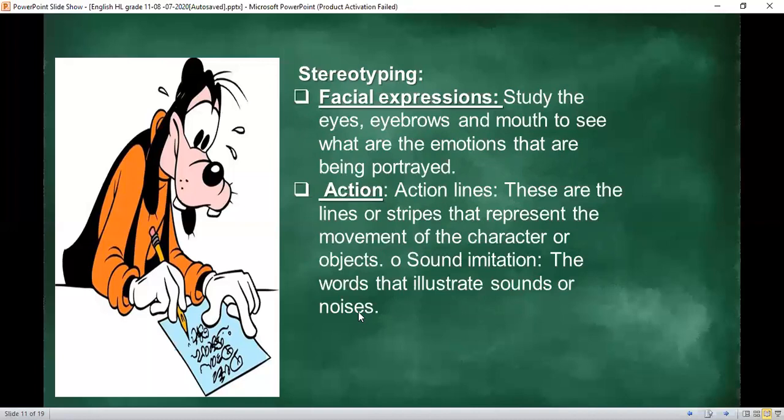Action - how can you tell there's action when this is a still picture that's not moving? There are action lines. These lines show you that a character is moving toward that direction or doing this and that. Sometimes it's a car or an animal. These are lines or stripes that represent the movement of the character or object.